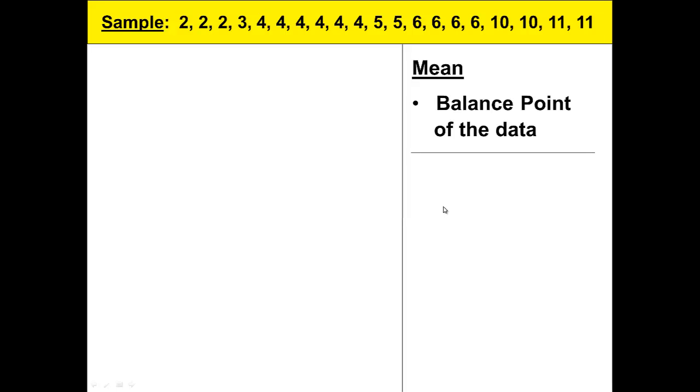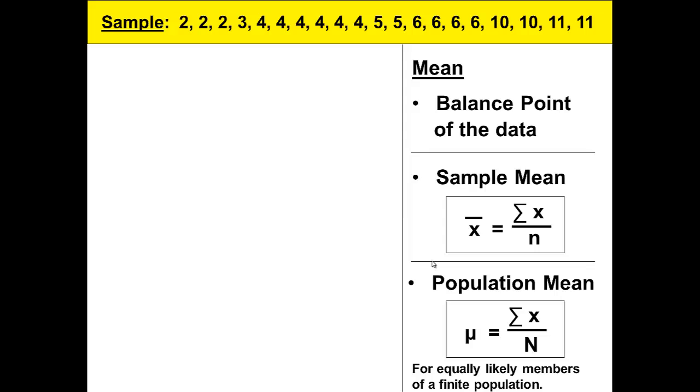Again it's the balance point of the data. The sample mean has the following formula. X bar equals the sum of the X's divided by n. Notice that we have X bar and n both associated with samples. The population mean can be found by adding up all the data values and dividing by the number in the population or mu equals the sum of the X's divided by capital N. Notice here that mu and capital N are associated with populations.